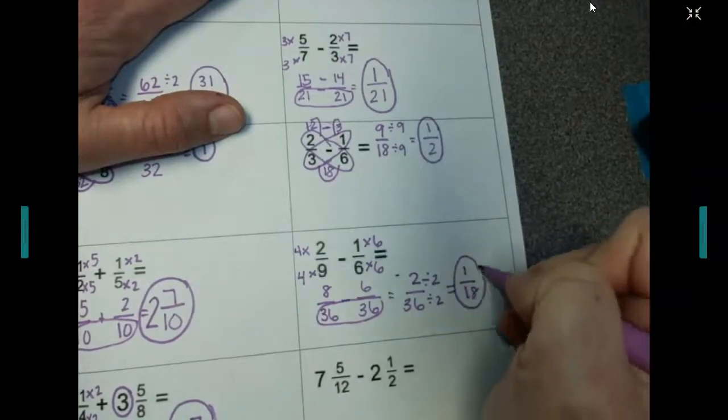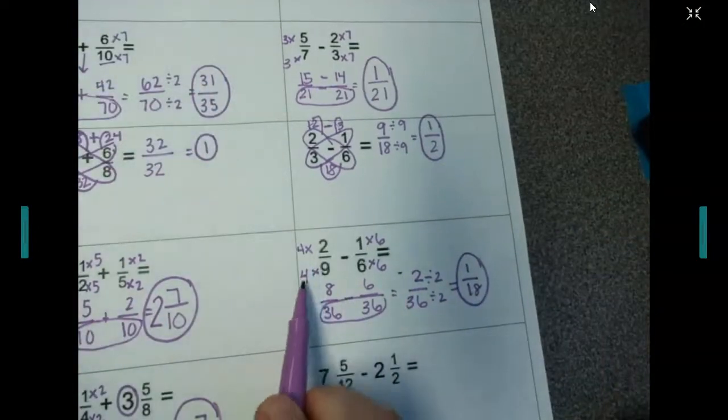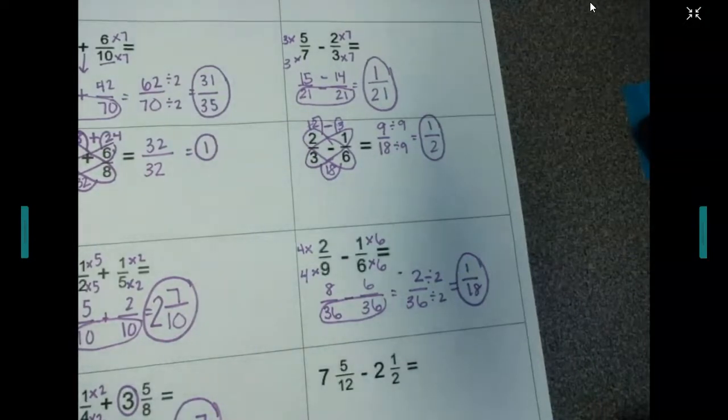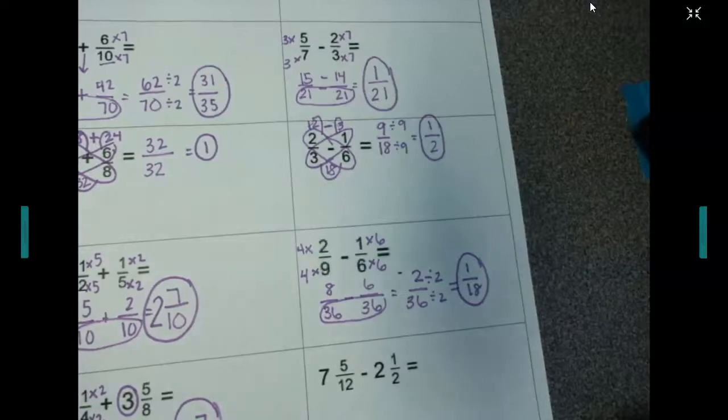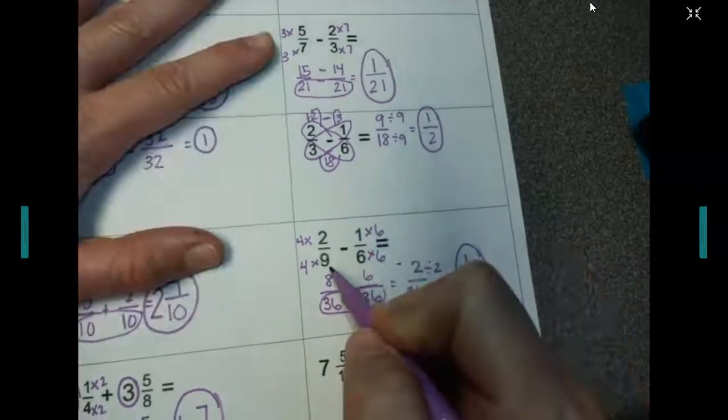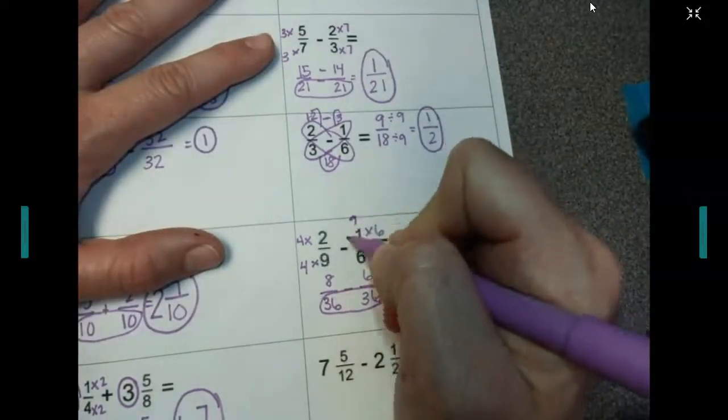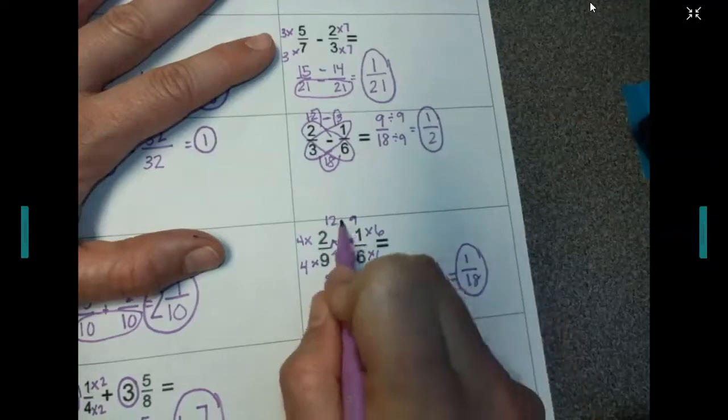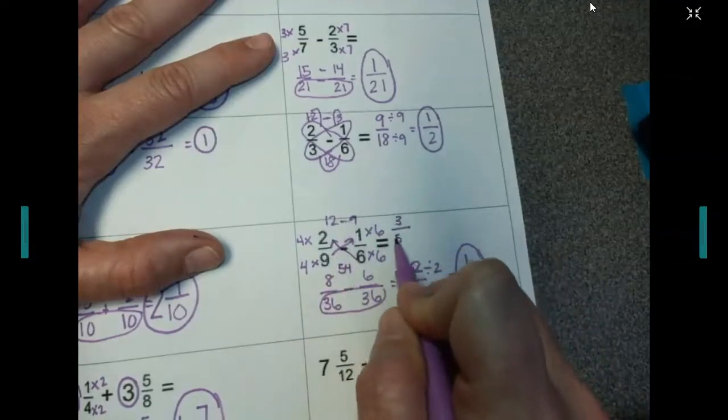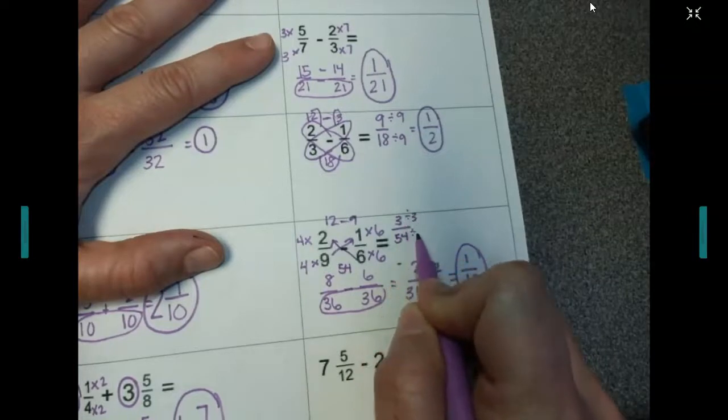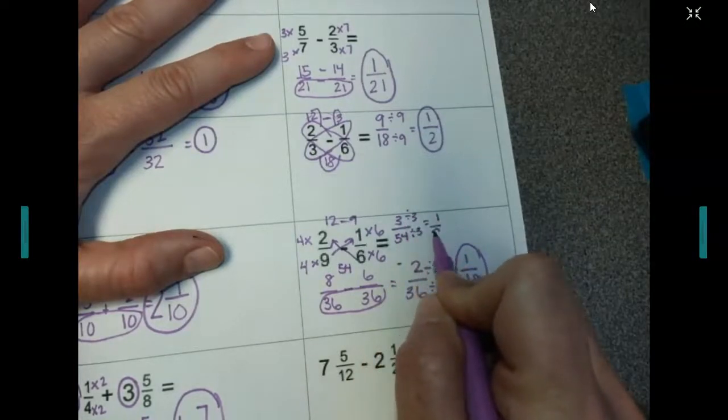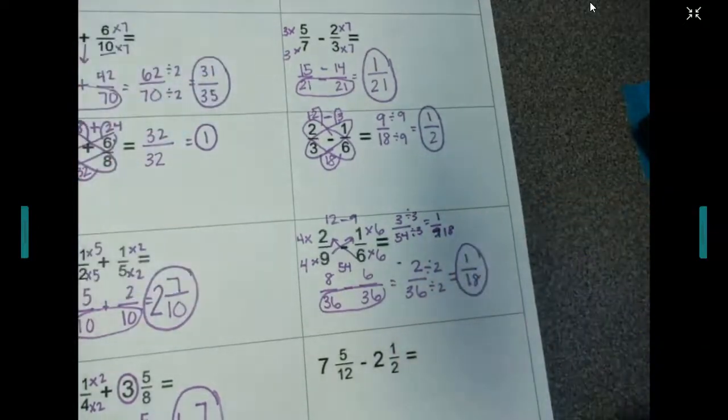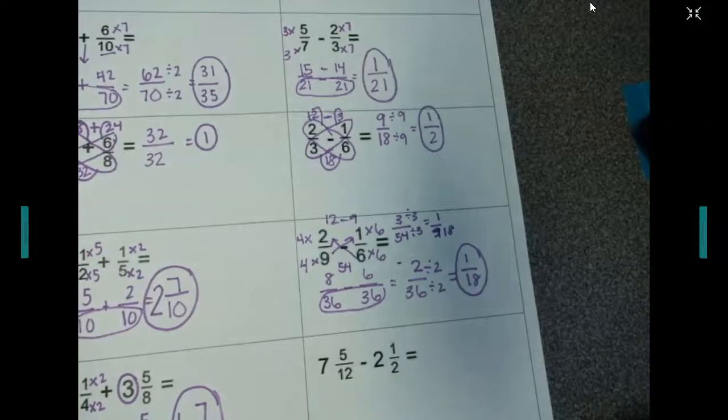I could have also chosen 18 to start with. I could have multiplied by 2 on this side and 3 on this side, and then I wouldn't have had to simplify. Some of you might have seen 54 because they both go into 54. There's a lot of different ways we can do this. We could have also done the butterfly on this one. And you would take 9 times 1 is 9. 6 times 2 is 12. And we got 54 right here with 9 times 6. 12 minus 9 is 3 over 54. And then we'd have to simplify by 3. And we get 1 over 18. There's a lot of different ways that we could solve this problem. And if you solve the problem correctly, it will be fine.